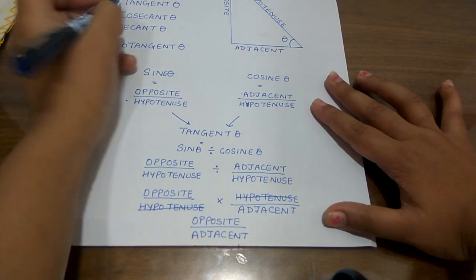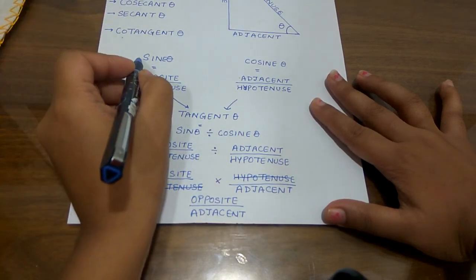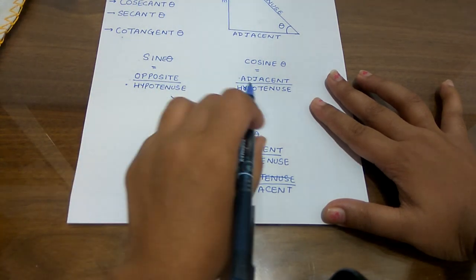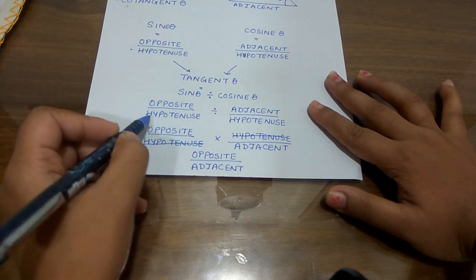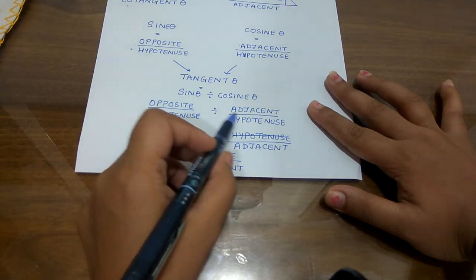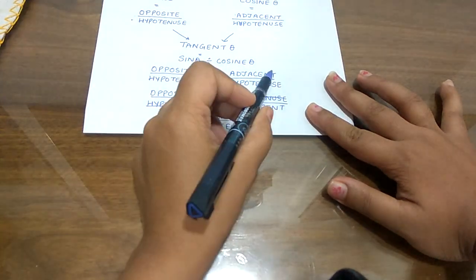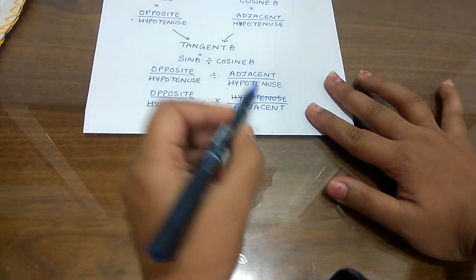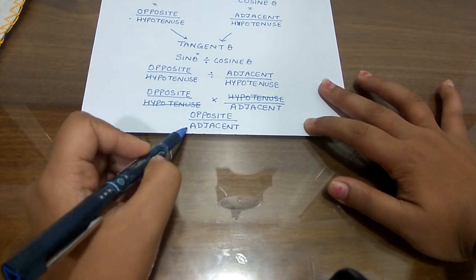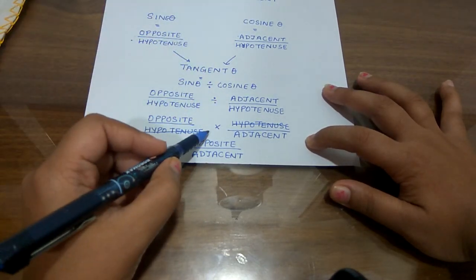Third is tangent theta, also called tan theta. Tan theta is simply sine theta divided by cos theta. If I put in the formula, this is opposite upon hypotenuse divided by adjacent upon hypotenuse. Now, when you divide fractions you reciprocal the second one, so it becomes hypotenuse upon adjacent. The hypotenuse and hypotenuse cancel each other, and I am left with opposite upon adjacent. So now you know sine theta, cos theta, and tan theta.